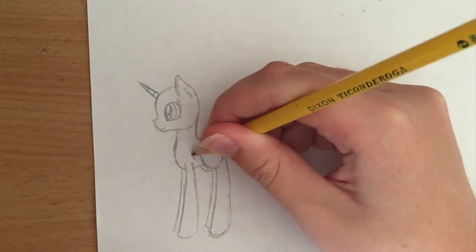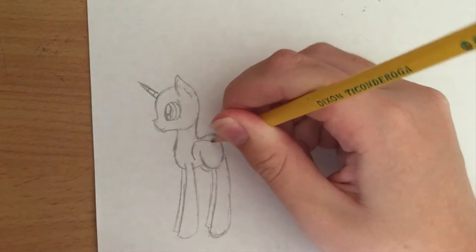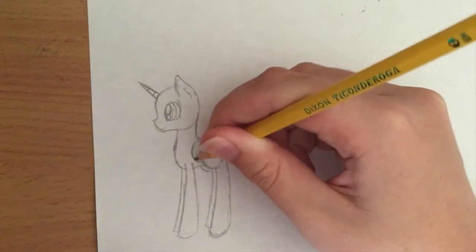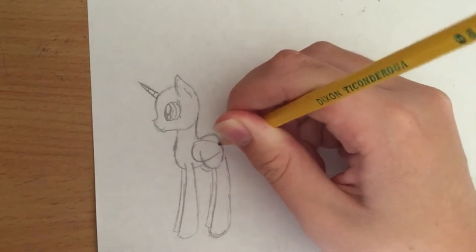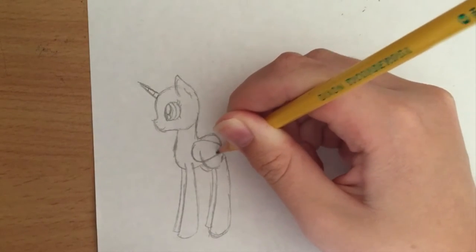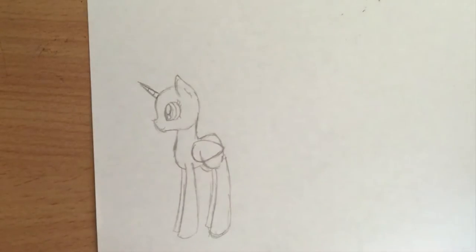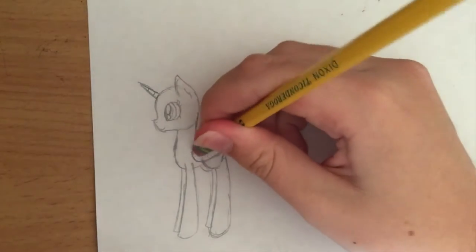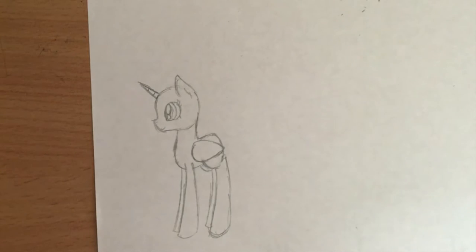Then you want to make a curved line, and you want to make a sideways teardrop shape. I like to make it right about so it just comes out a little bit farther than the back of the pony, and then you can erase this line here where the leg is.